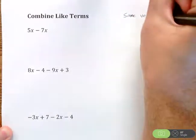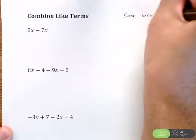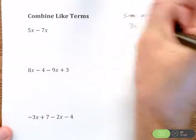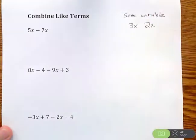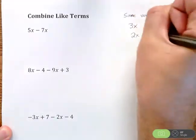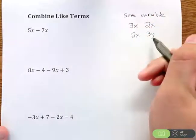We're combining like terms. You can only combine terms that have the same variable. In that case, it needs to be like a 3x and a 2x - those could combine together.